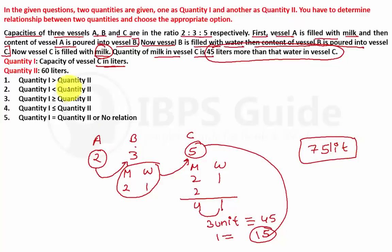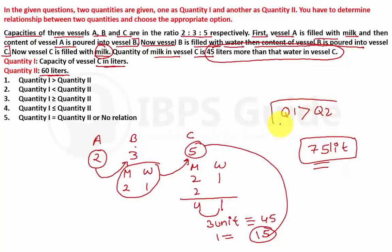Comparing: Quantity 2 is 60 liters and Quantity 1 is 75 liters. So Quantity 1 is greater than Quantity 2. Option number 1 is the correct answer.